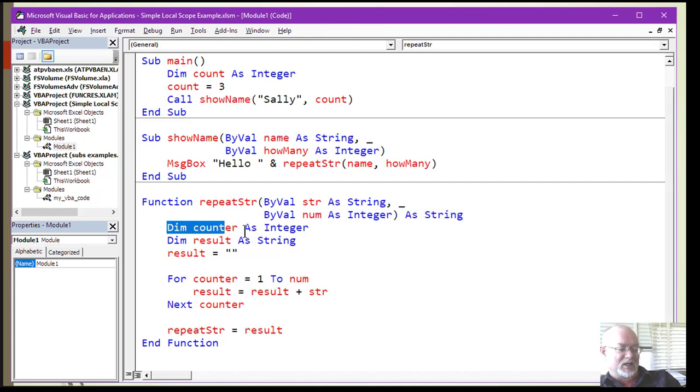We do our computation with two local variables, counter and result. I set result to an empty string, then I loop through where counter goes from 1 to num, and I'm adding on the string to my empty string result. It goes around and adds it on again multiple times, essentially repeating the string a set number of times. Then here's the magic at the bottom: I assign my result to the name of the function. When I assign that to the name of the function, the value is returned.